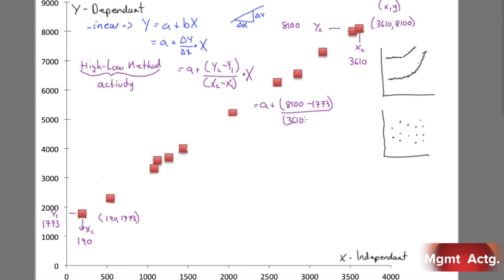A plus, and on the top y2 is 8100 minus y1 is 1773, over x2 is 3610 minus 190, times x, which equals a plus 6327 over 3420 x, which equals a plus 1.85 x. Now you're probably saying why didn't you just write out 1.85 x, why did you go through the steps? Here's why: I want you to get used to going through the steps.